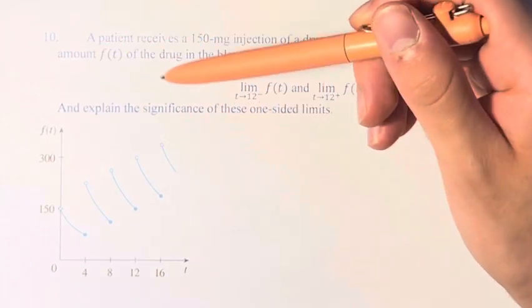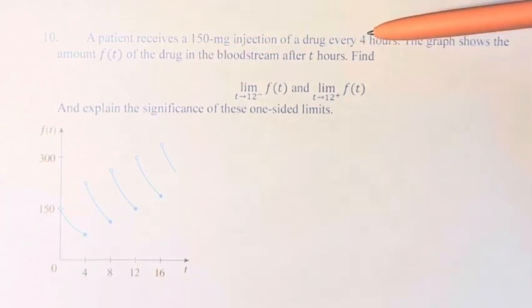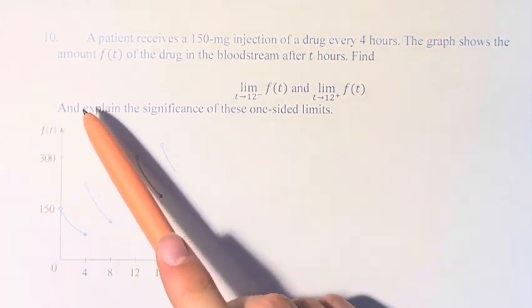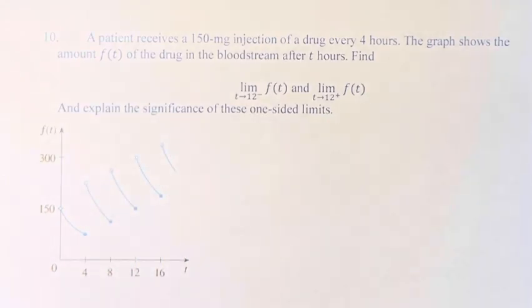The graph shows the amount f(t) of the drug in the bloodstream after t hours, and we're asked to find these two limits. We're also asked to explain the significance of these one-sided limits.